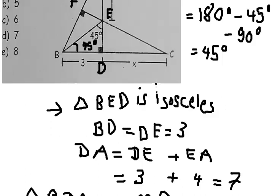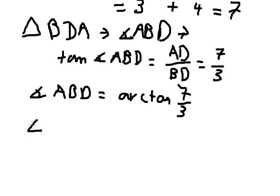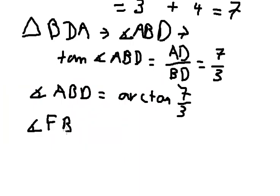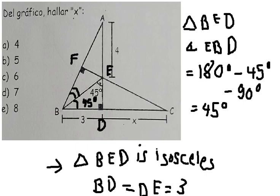So now we can find the angle FBE. The angle FBE equals arctan(7/3) minus 45 degrees.